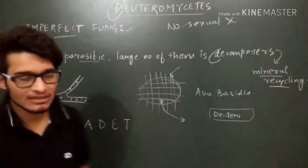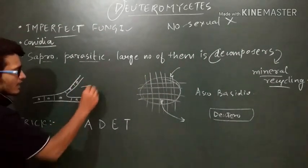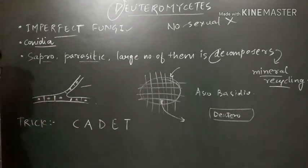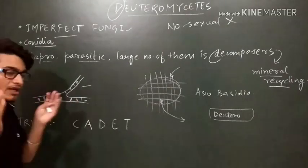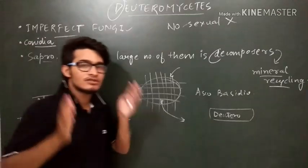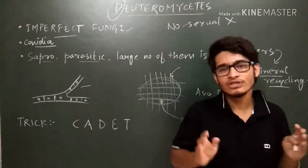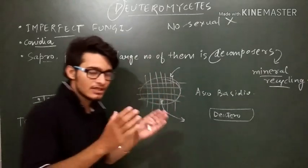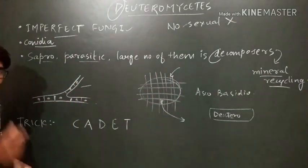Now let's talk about the mycelium of Deuteromycetes. As you can see, it is branched and it is septate — septa are present. This means that each compartment contains one nucleus; there is no coenocytic condition. So the mycelium is both branched and septate.